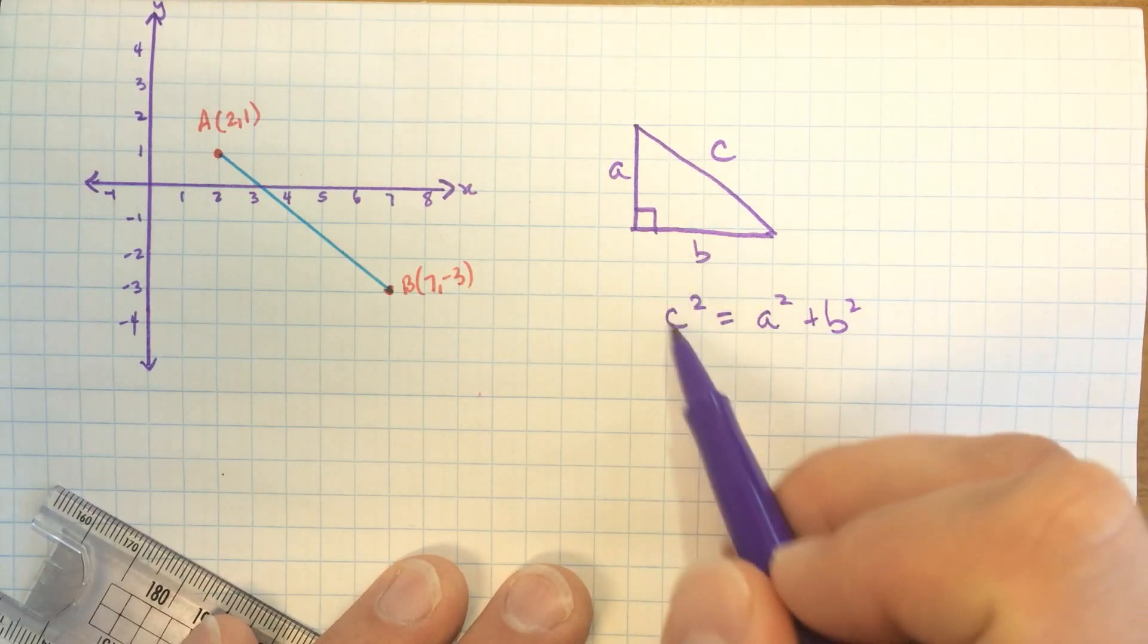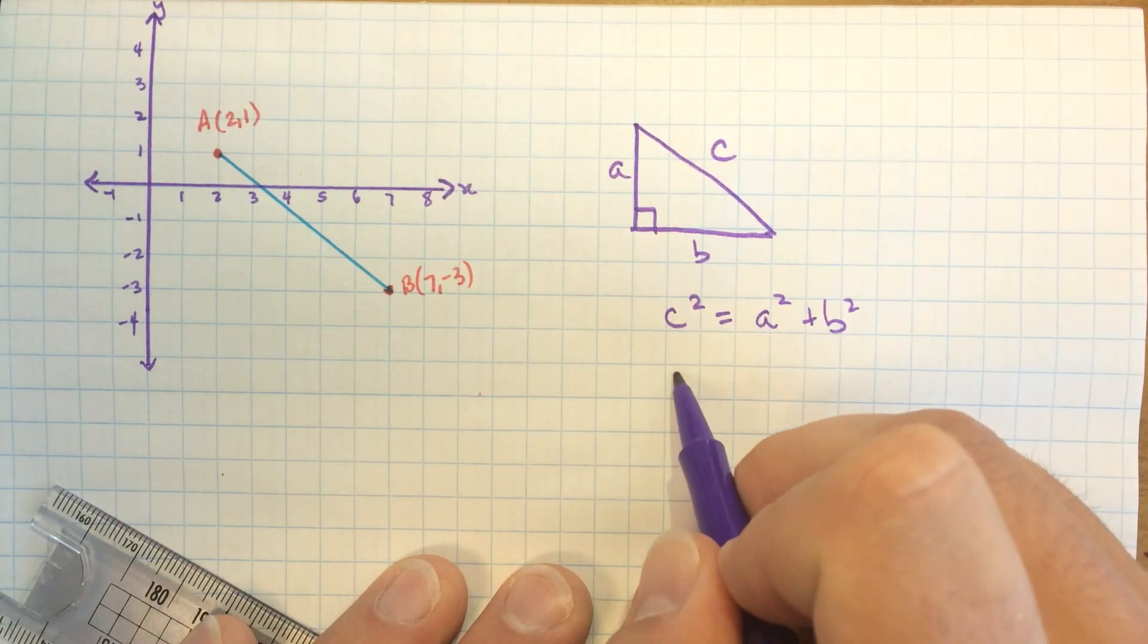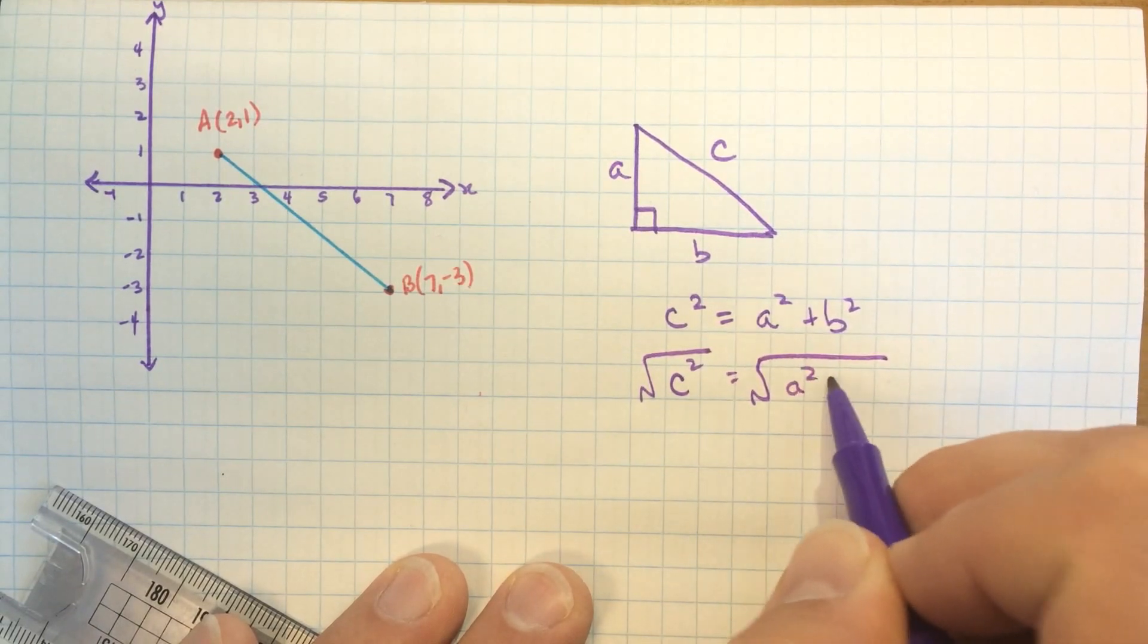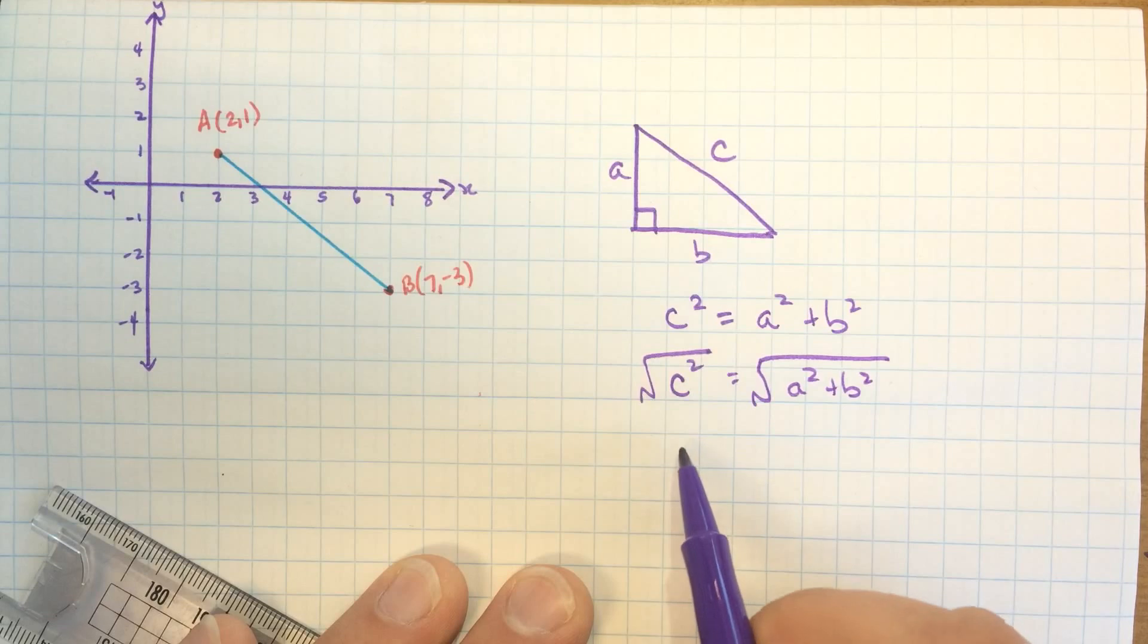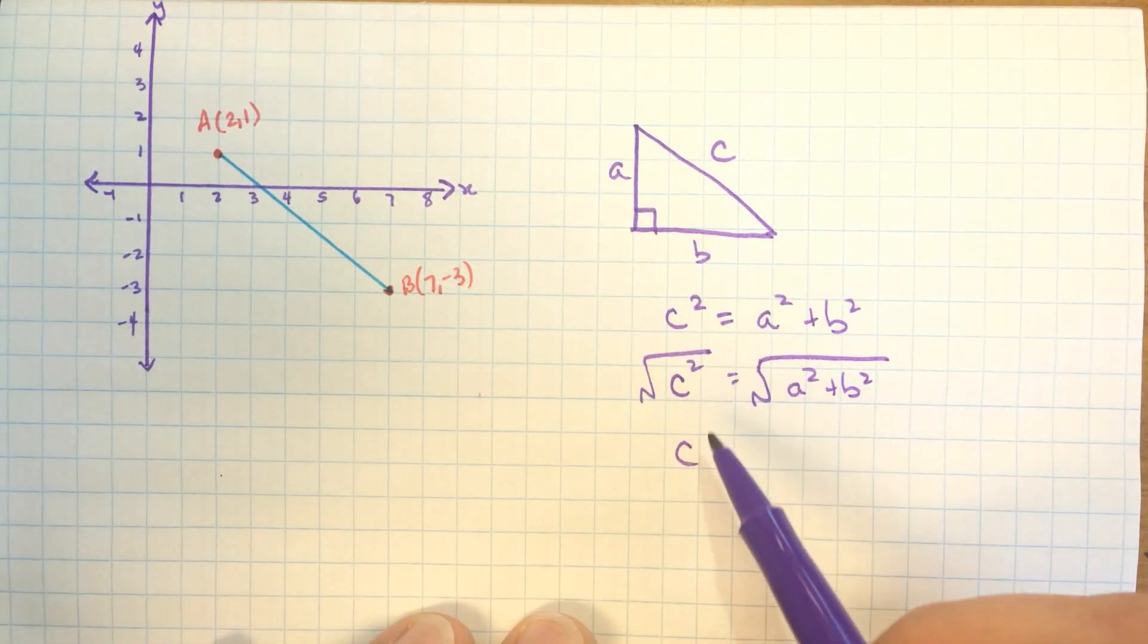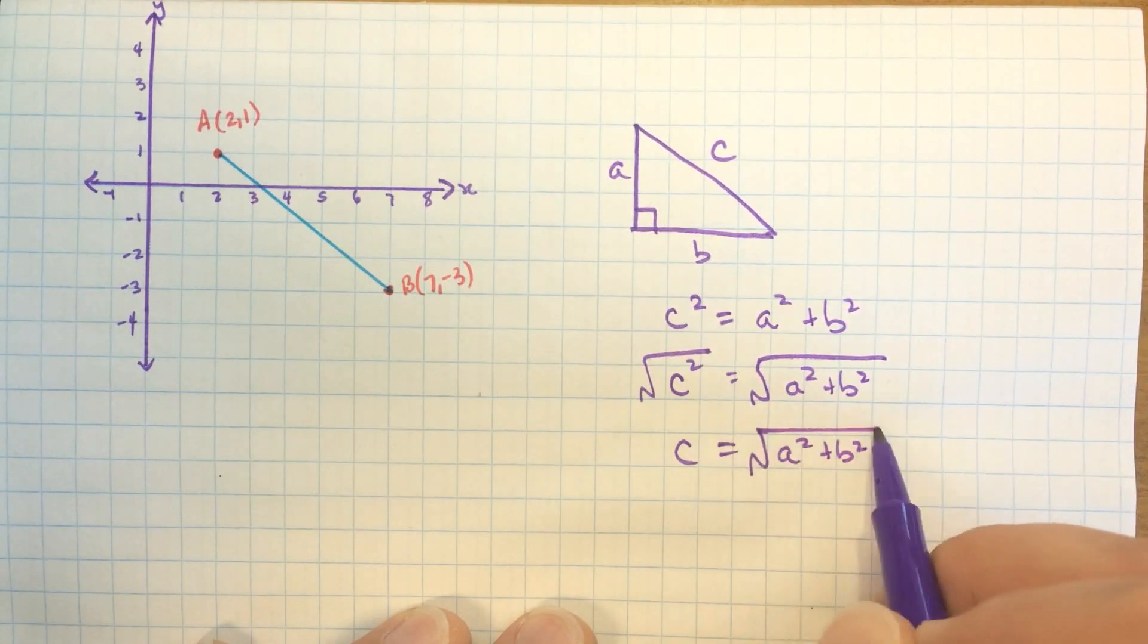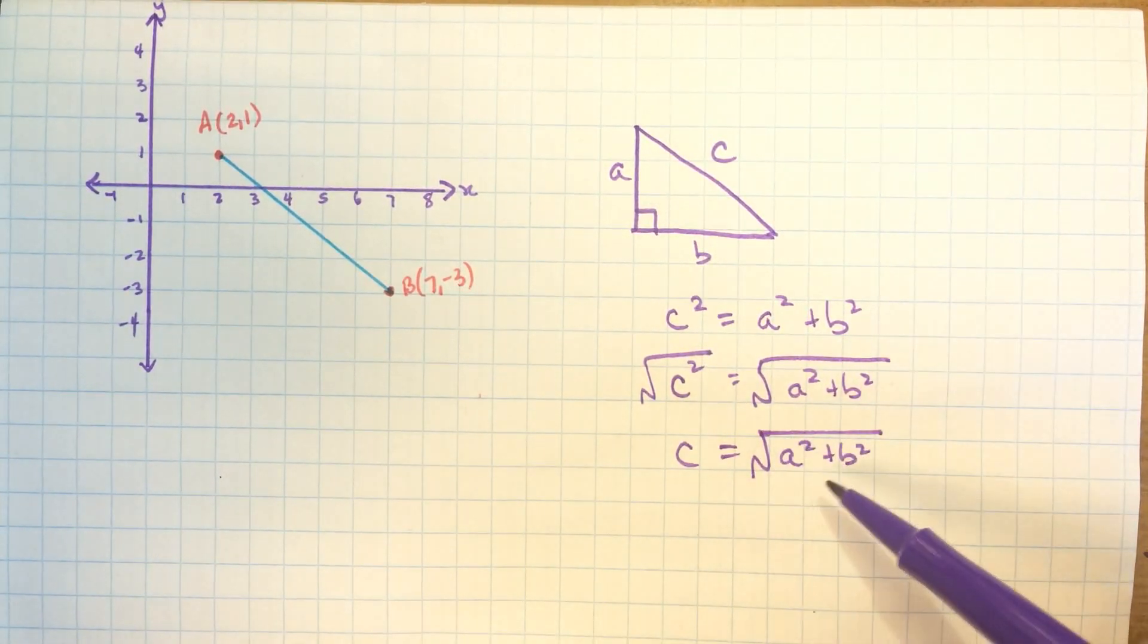And then we would take the square root after we found this value, we would take the square root to find the value of C. Well, we're going to simplify that expression here. We're going to take the square root of both sides. And this will give us over on this side, this will give us the value of C, because C can't be a negative number. We're allowed to do this. Squaring C and then taking the square root of it is the same as leaving it alone. And so we end up with this expression. And maybe you've seen that one before, too.